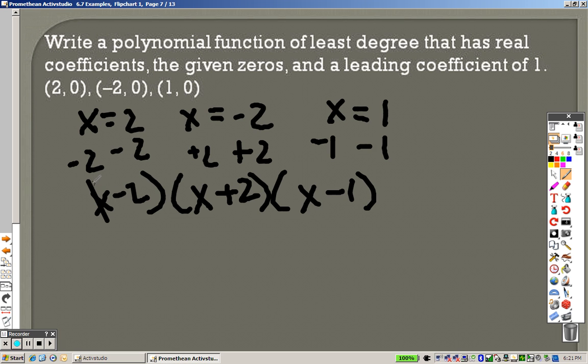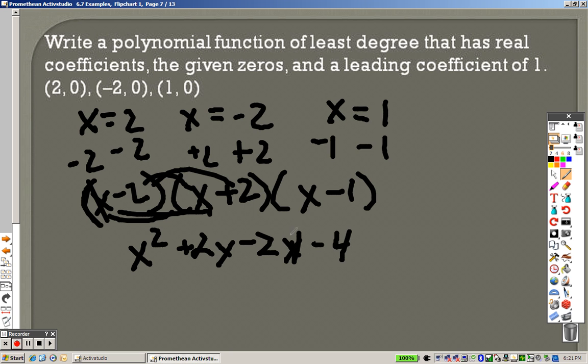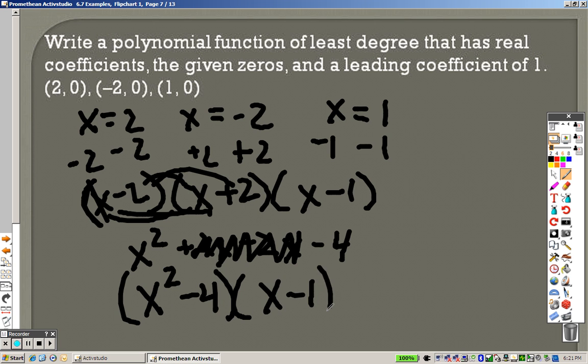And I subtract 1 to get x minus 1. And I have no idea what happened here. It's supposed to be an x. So x times x is x squared. x times 2 is a positive 2x. That's a negative 2x. And that is a negative 4. Those cancel out. So really, I just have x squared minus 4 times x minus 1 that I have to FOIL.